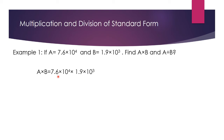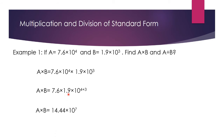We calculate 7.6 multiplied by 1.9, and by using the indices rule we add the powers: 10 to the power 4 added with 10 to the power 3 gives 10 to the power 4 plus 3. Now, 7.6 multiplied by 1.9 equals 14.44, multiplied by 10 to the power 4 plus 3, which is 7.